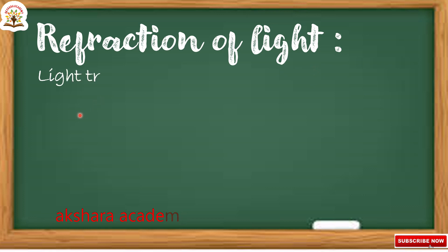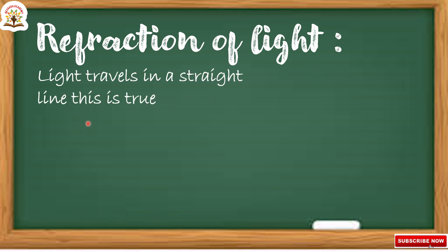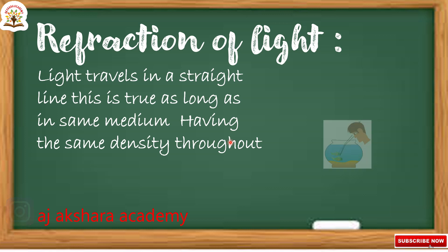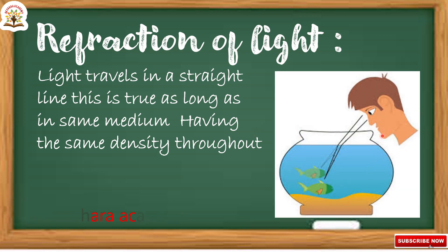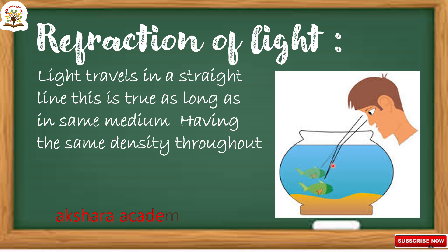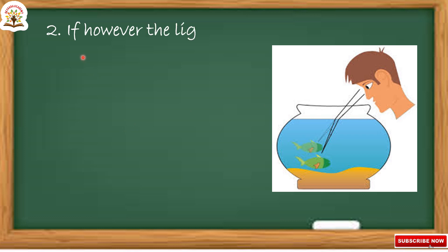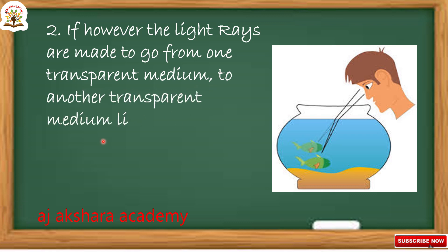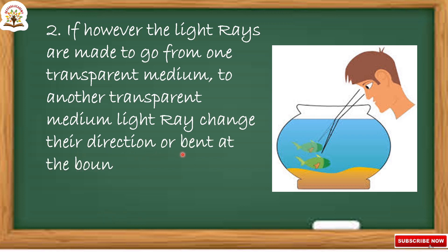Refraction of light. Light travels in a straight line — this is true as long as it is in the same medium having the same density throughout. However, if the light rays are made to go from one transparent medium to another transparent medium, the light rays change their direction, or bend, at the boundary separating the two media.